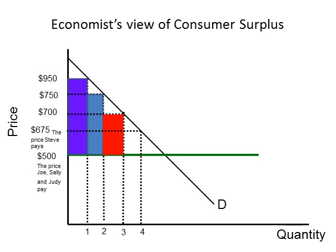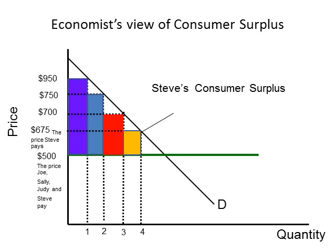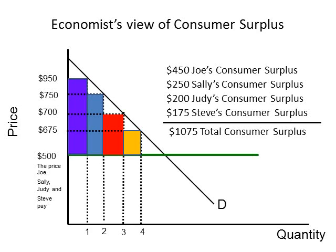Steve wants to buy an HDTV also. He's willing to pay $675 for the TV but only pays $500. So his consumer surplus is the difference between $675 and $500, or $175. The total consumer surplus for all consumers is the sum of the individual consumer surpluses. In our example, the total is the sum of Joe's consumer surplus ($450), Sally's ($250), Judy's ($200), and Steve's ($175), for a total of $1,075.